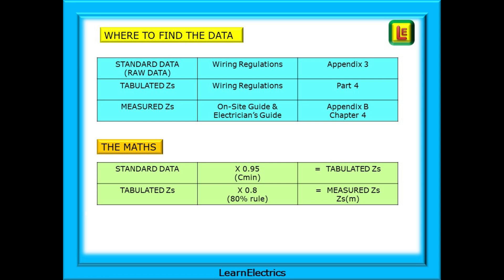Measured ZS is found in the on-site guide. And this is the ZS that you will measure and check against with your test meter when on-site. The maths part reminds you of how to get the numbers, when to use Cmin, when to use the 80% rule. Measured ZS is sometimes written as ZSM with a small m in brackets, just to show that this is the measured ZS value.